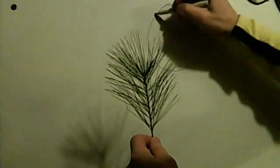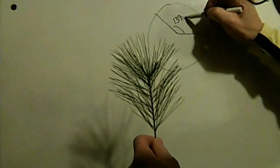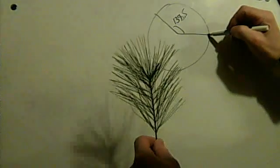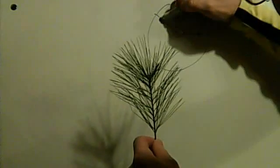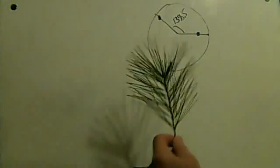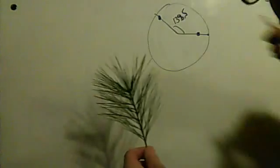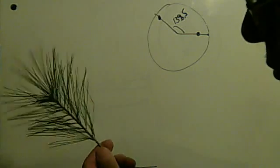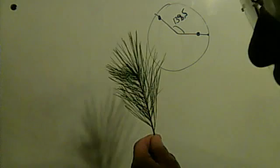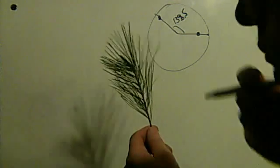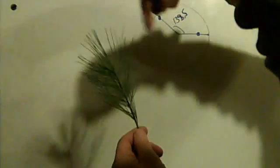So what we found was 137.5 degrees between the first needle branch and the next one. And we found that this angle produced Fibonacci numbers in terms of the number of needles in a certain number of rotations.